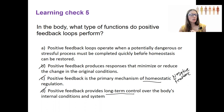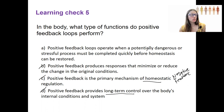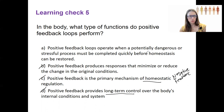Examples of positive feedback include childbirth, milk letdown, inflammation, blood clotting, and action potentials. These are all processes that need to happen quickly. Not all examples of positive feedback are emergency or dangerous situations, but they all involve processes that need to be completed rapidly.